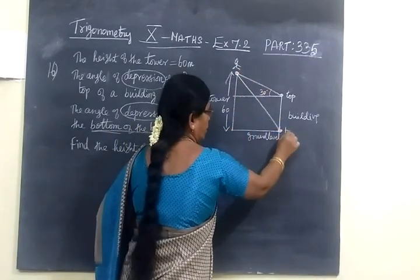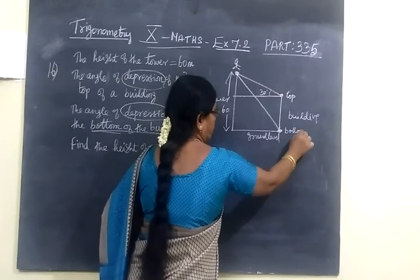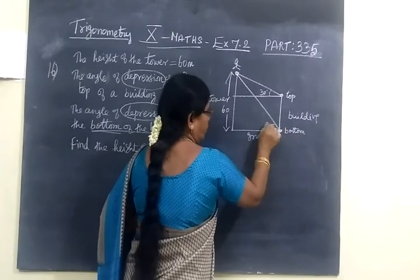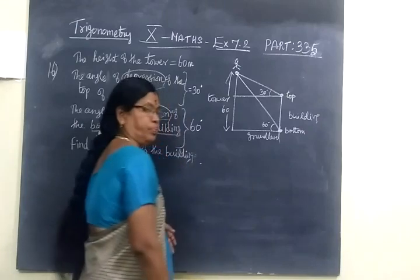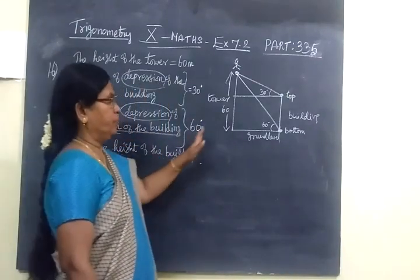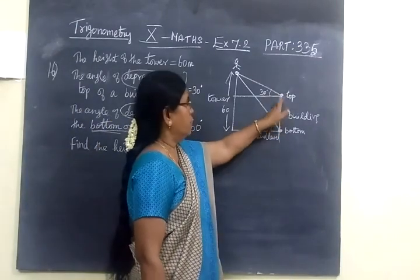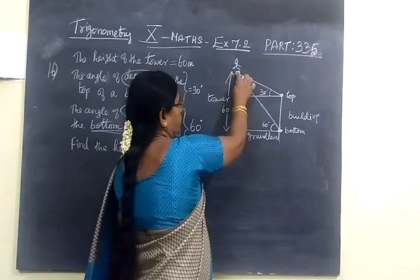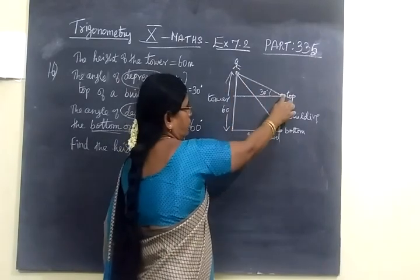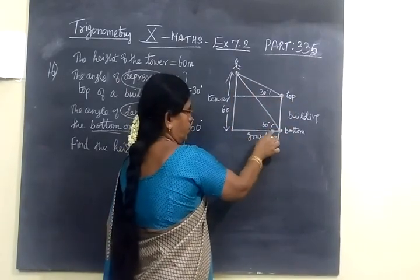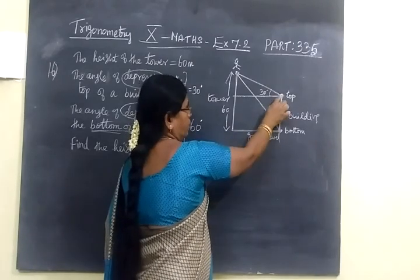He is looking at the bottom of the building at an angle of depression, 60 degrees. Very simple. This is building. This is tower. This one is tower and this one is building. And this is ground level. This is parallel line.